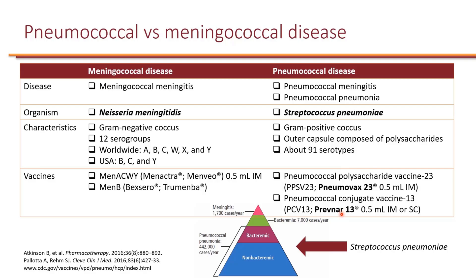We have two different pneumococcal vaccines: Pneumovax-23 and Prevnar-13. It's important to distinguish between these because there is some misconception out there. When we talk about meningococcal disease, people may refer to it as the meningitis vaccine, and similarly, people may refer to pneumococcal vaccine as the pneumonia vaccine.